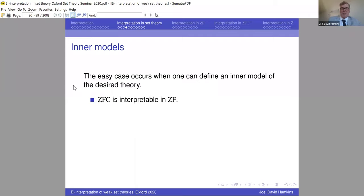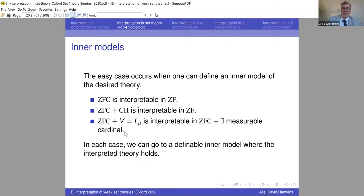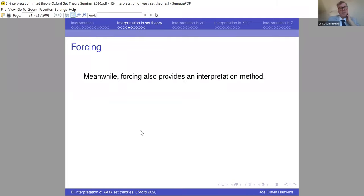The easy case of interpretability is when the interpreted model is a definable inner model. For example, ZFC is interpretable in ZF because in any model of ZF we can define the constructible universe L, inside which the axiom of choice holds. ZF proves this, so ZFC is interpreted in ZF. Similarly, CH and even GCH are true in L. Also, the canonical inner model of a measurable cardinal is interpretable in ZFC plus 'there is a measurable cardinal.'